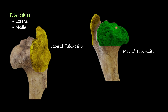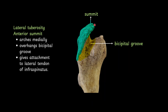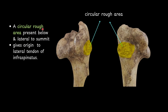You will find two tuberosities: lateral and medial. The lateral tuberosity is very large and prominent compared to the medial one. It has two parts: the anterior summit, which arches medially and overhangs the bicipital groove, giving attachment to the lateral tendon of the infraspinatus muscle. A circular rough area present below and lateral to the summit also gives origin to the lateral tendon of infraspinatus. The posterior convexity gives attachment medially to the medial tendon of infraspinatus muscle.